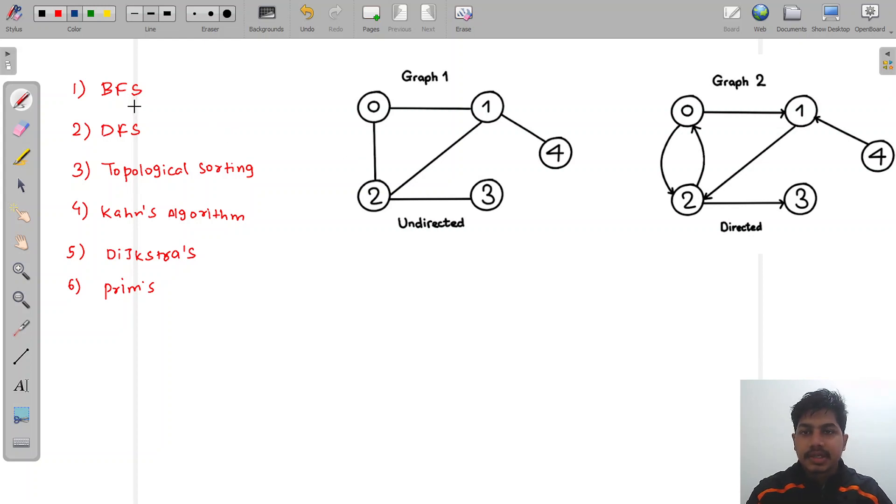BFS is a graph traversal technique. It explores the graph by first visiting neighbors which are one unit distance. If we start from zero, first node one and node two will be visited, then it visits the neighbors which are two unit distance—that is, node four and node three will be visited.